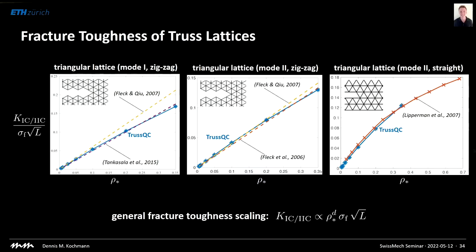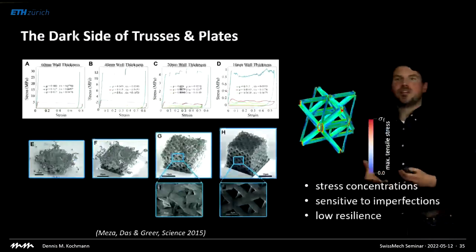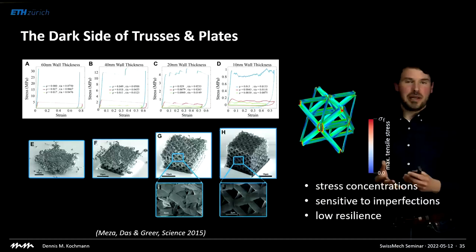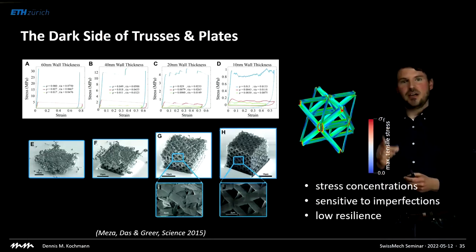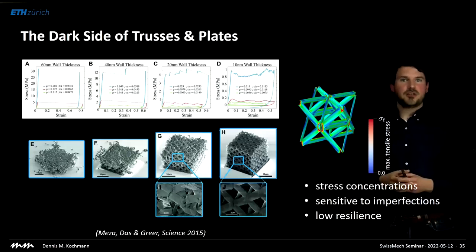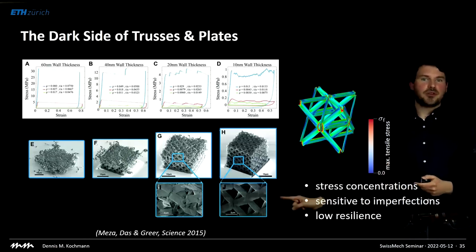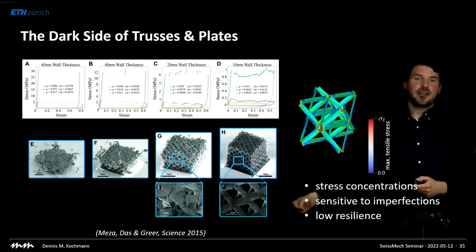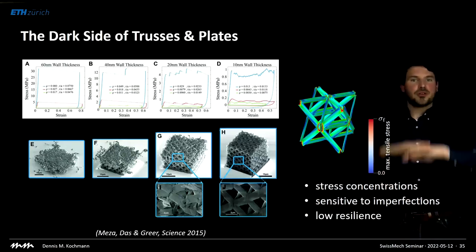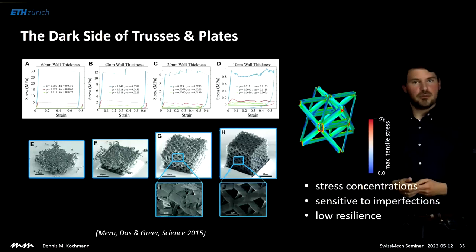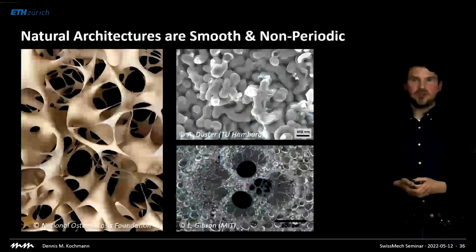One thing all these models assume is that a strut fails when stress reaches a certain threshold — but that's unfortunately not what we see in most experiments. There is a dark side of trusses and plates: they have junctions, and anyone who studies undergraduate mechanics knows that where two beams join there is a stress concentration — hot spots shown in red. Because of these stress concentrations, micro-cracking happens primarily at the nodes; the design is further sensitive to imperfections, leading to low resilience. Loading these samples causes the nodes to fail very early on, which is a bad feature of truss- and plate-based designs.